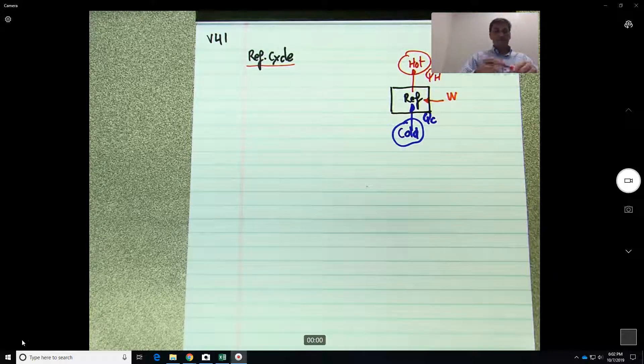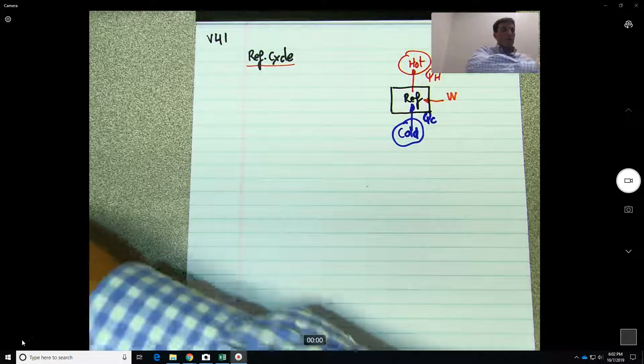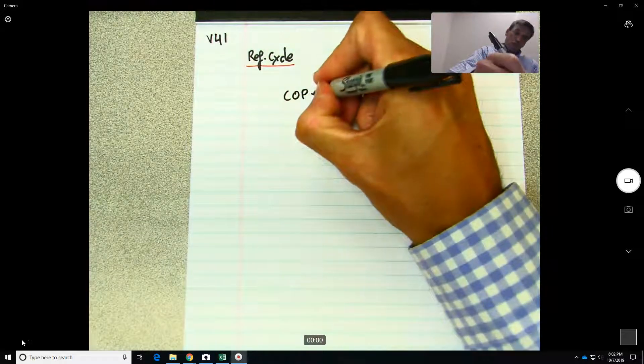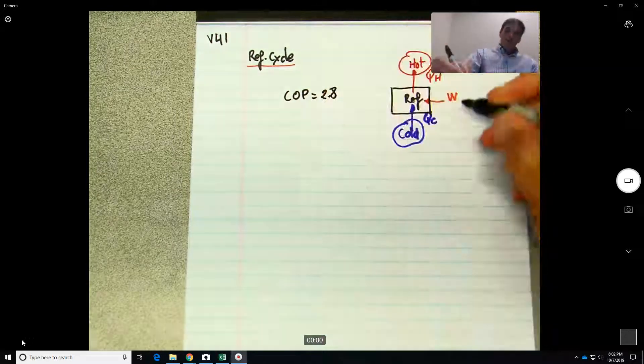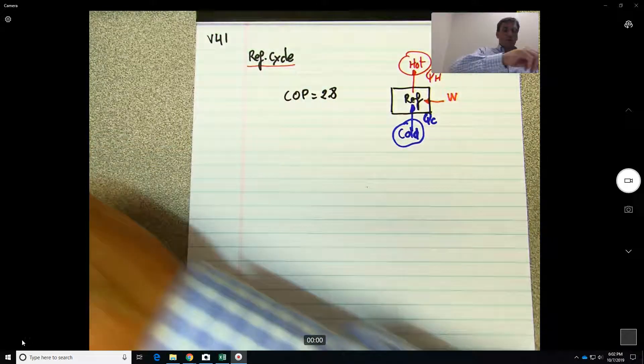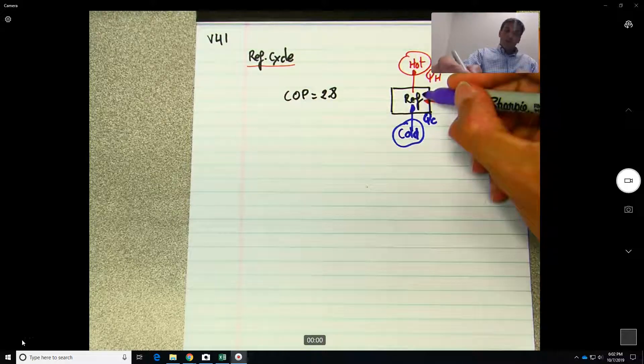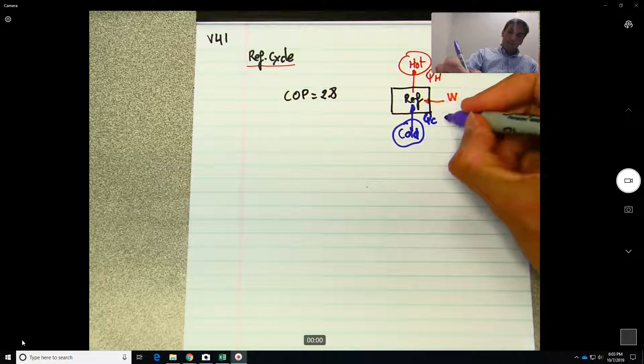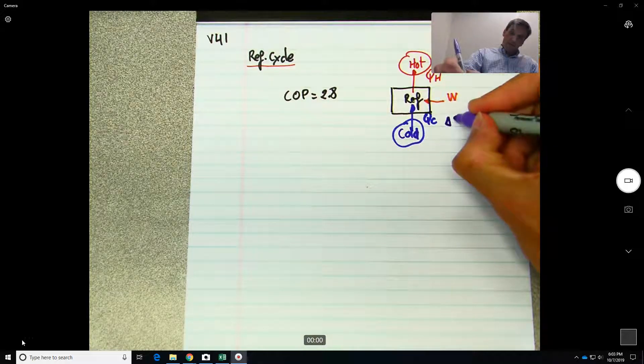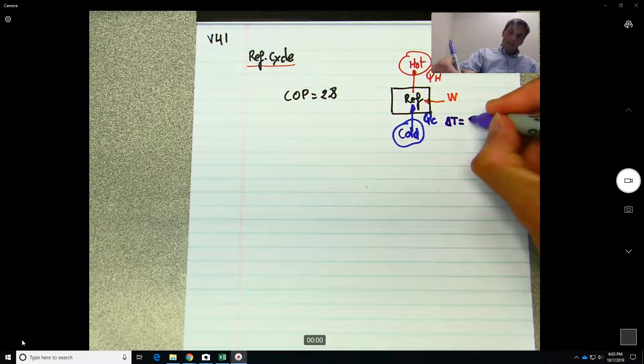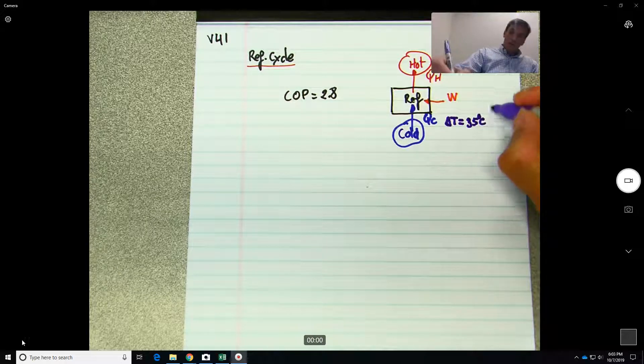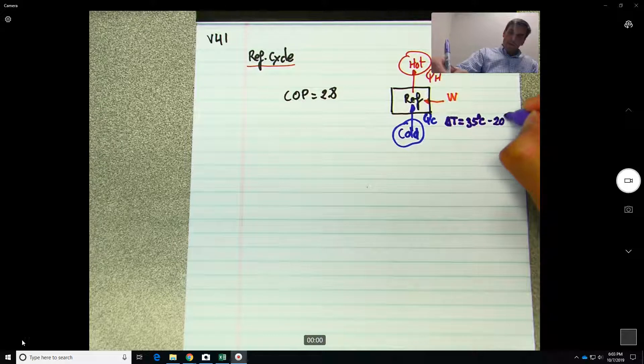Then you have work in between a cold reservoir—this is Q cold—and a hot reservoir, which will be Q hot. Okay, we know the coefficient of performance COP is equal to 2.8. So here, what happens when you go from the cold...